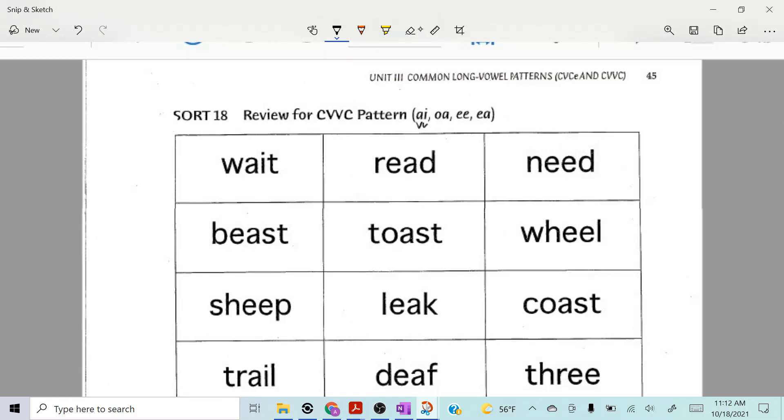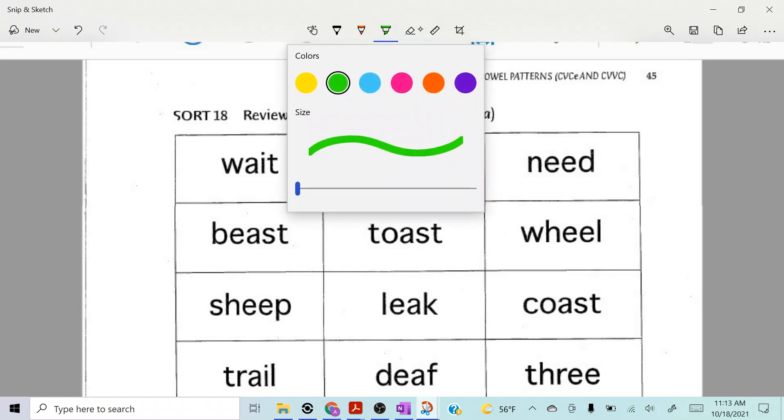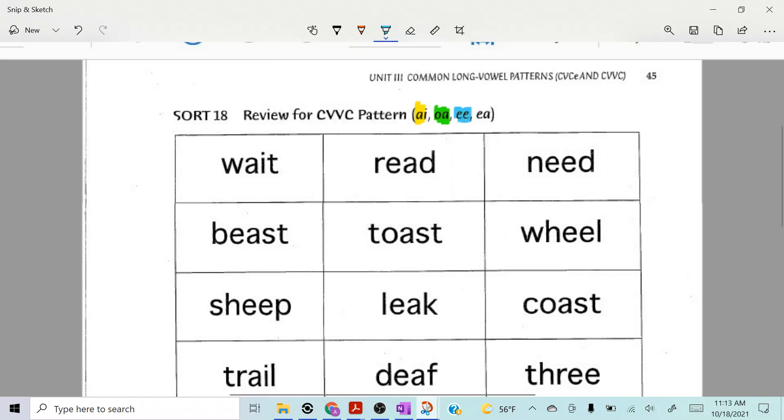So why don't we do this: let's do ai in yellow, let's do oa in green, let's do ee in blue, and let's put a circle around ea. But guess what, there's going to be another pattern for ea.